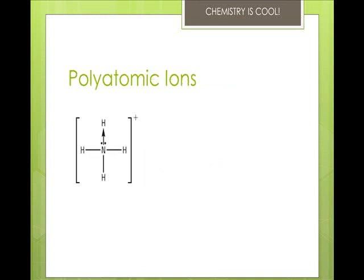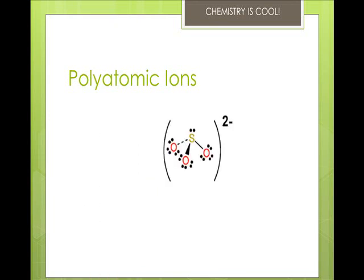Groups of atoms held together by covalent bonds with a charge are called polyatomic ions. We can't build them directly because they function as a unit. When you write them, you surround them with brackets and write the charge. Examples are ammonium and sulfate.